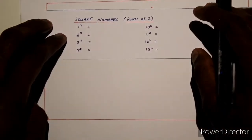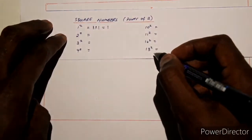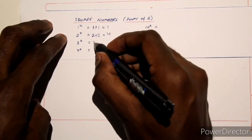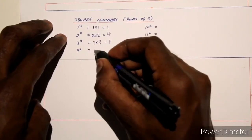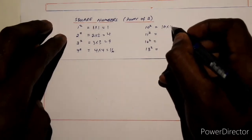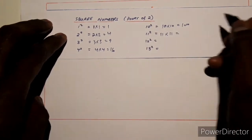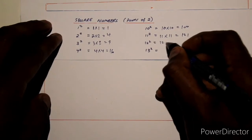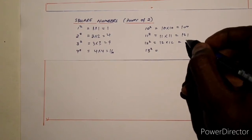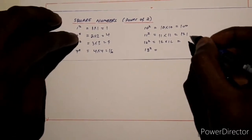So if we have 1 squared, we know that we are multiplying 1 two times — our answer is 1. If we have 2 to the power of 2, then it's 2 times 2, which gives 4. Then 3 times 3 is 9, 4 times 4 is 16, 10 to the power of 2 is 100, 11 times 11 is 121, and 12 times 12 is 144.